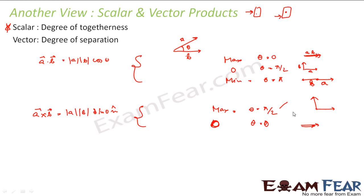So this is just another view or you can say a memory to remember the scalar and vector product. Scalar is degree of togetherness, how close they are. And vector is degree of separation, how apart they are, or how perpendicular they are.